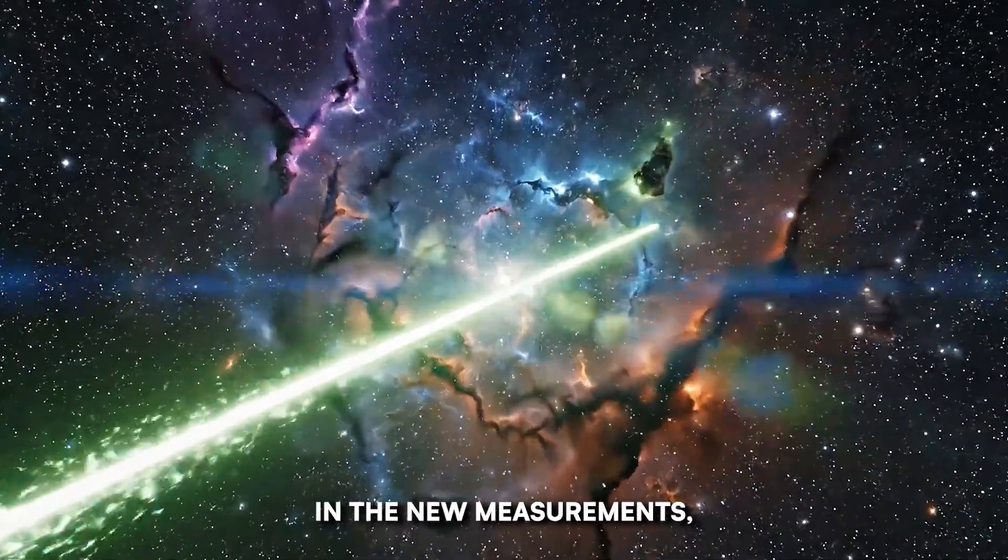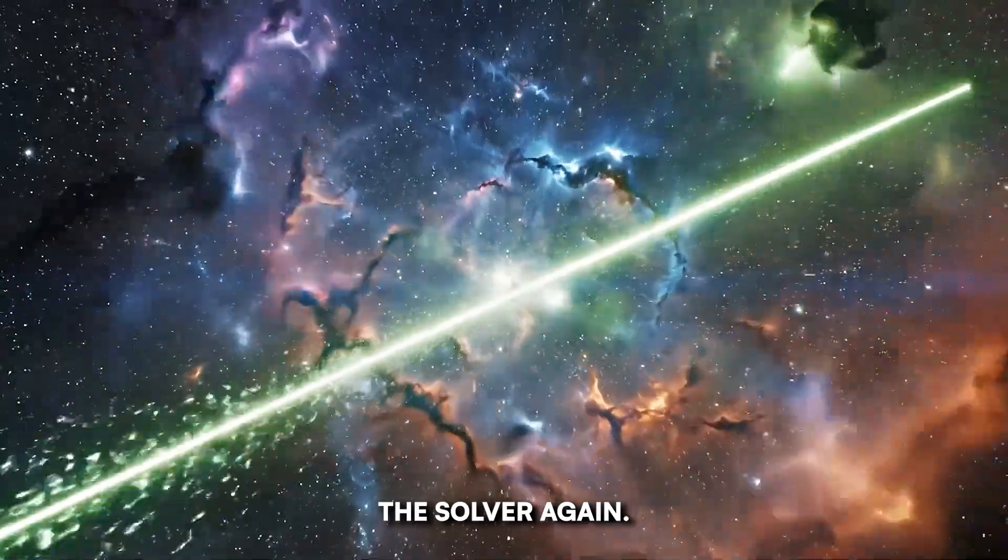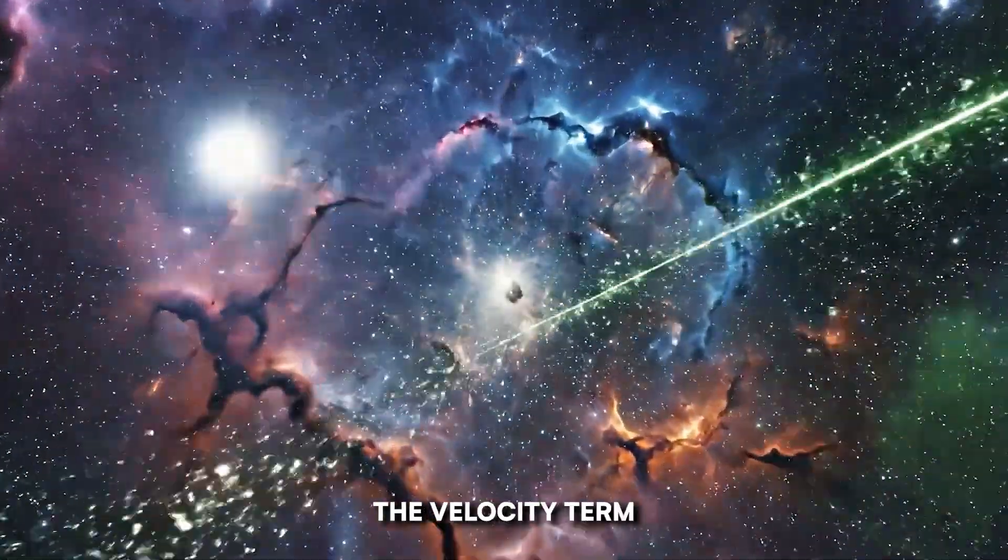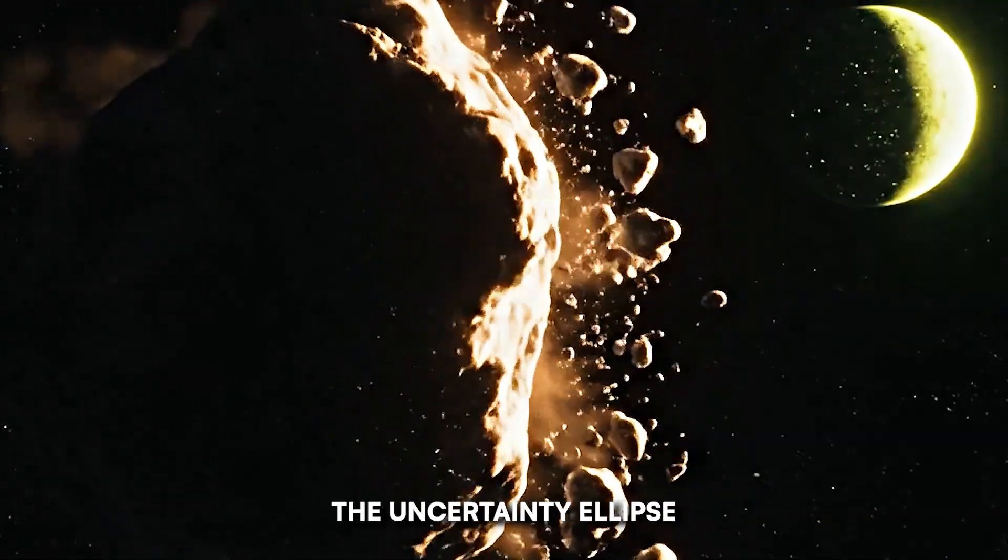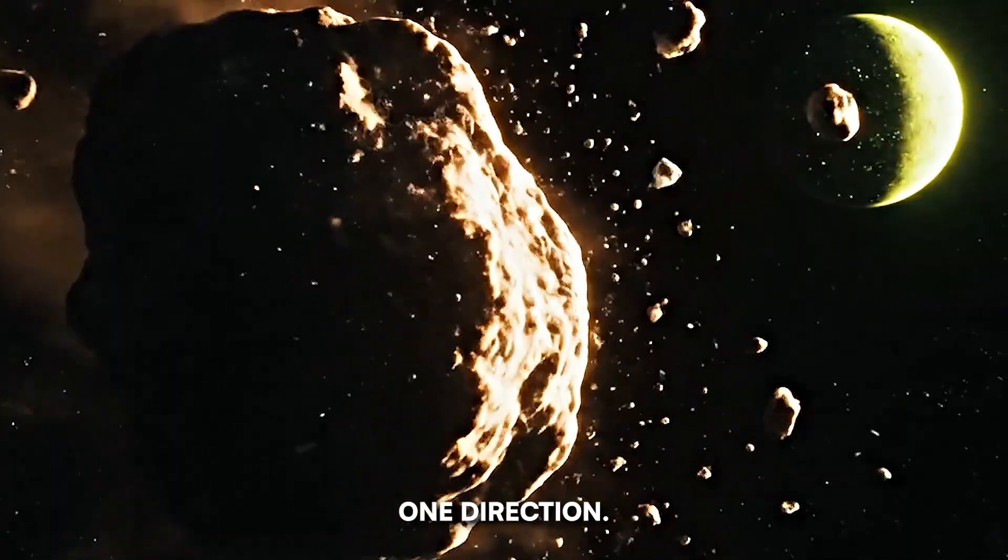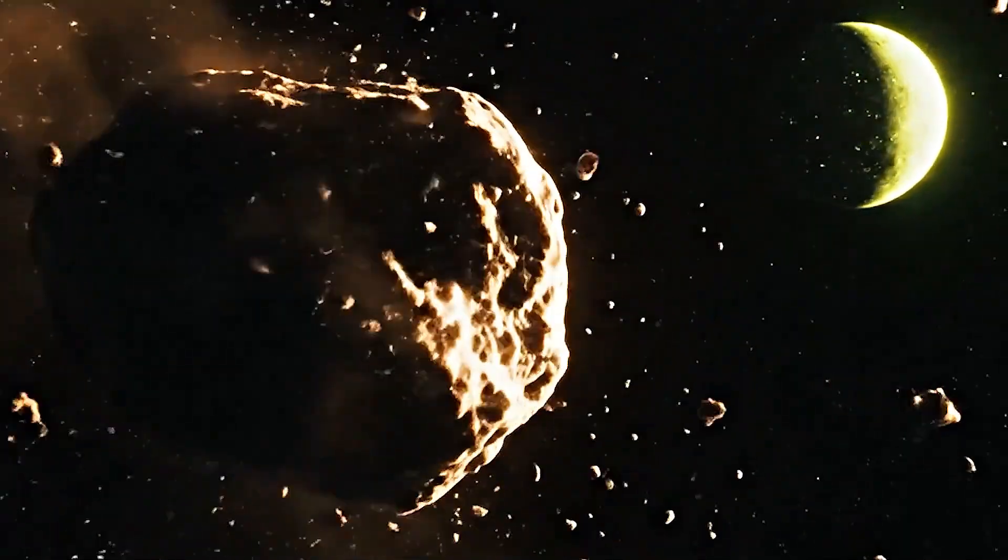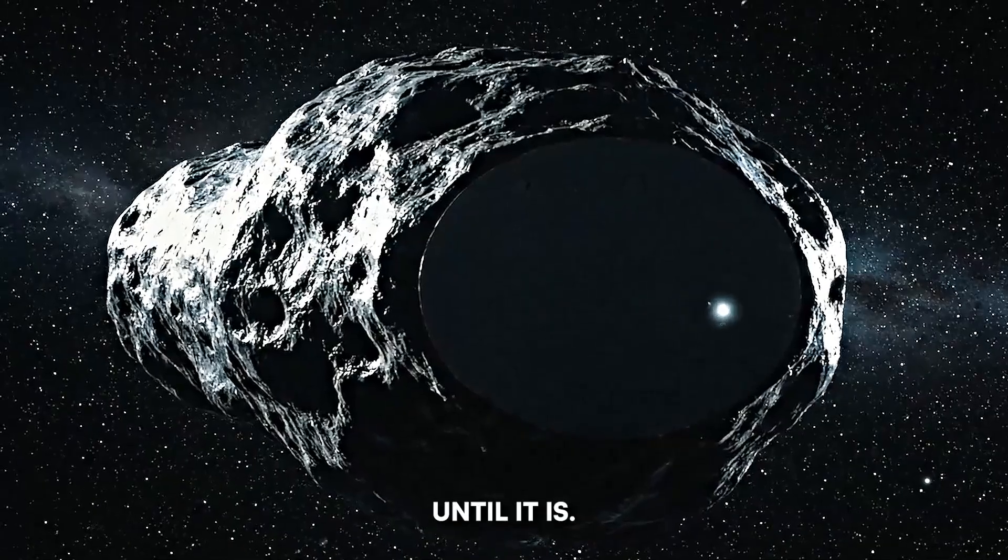Astronomers did what they always do. They folded in the new measurements, reweighted the old ones, and ran the solver again. The orbit nudged. The velocity term breathed. The uncertainty ellipse stretched in one direction, then relaxed in another. It's normal. It's routine. Until it isn't.